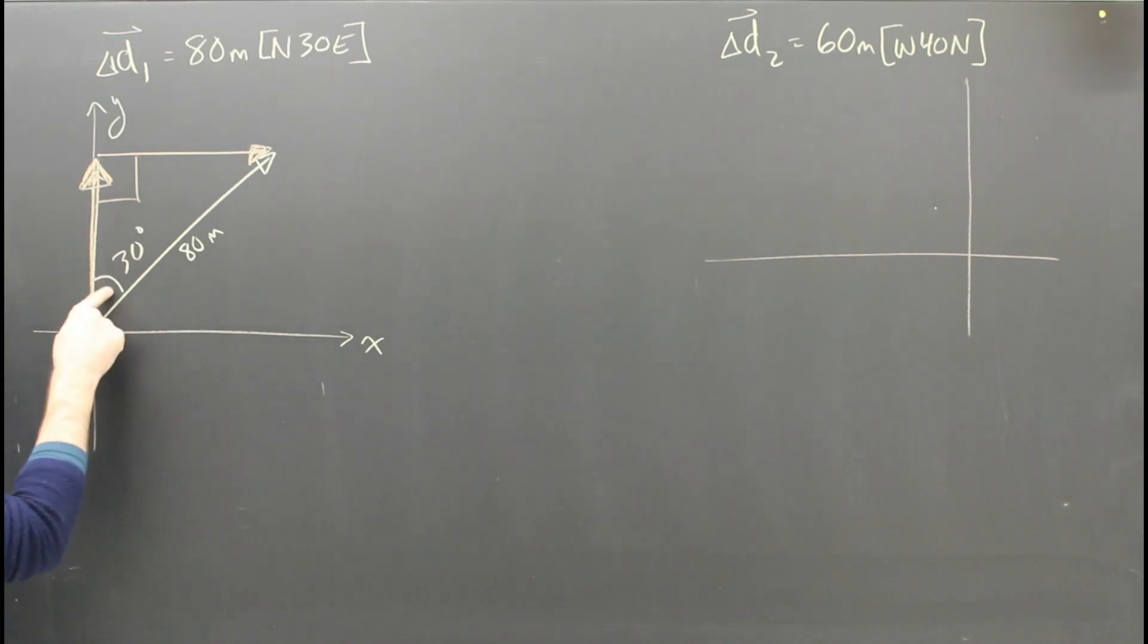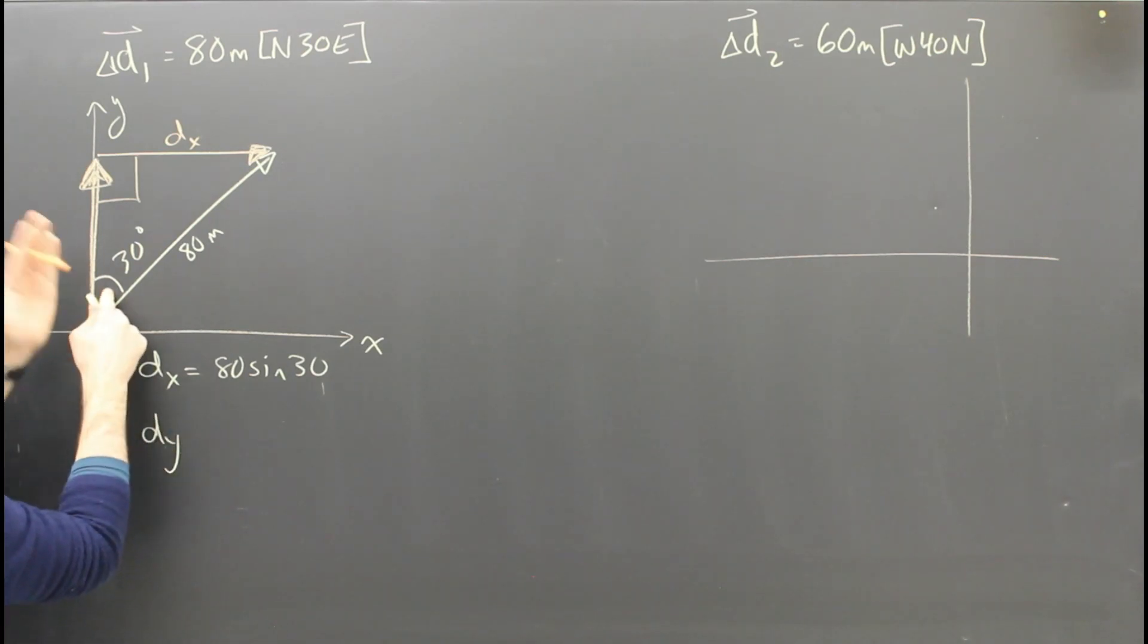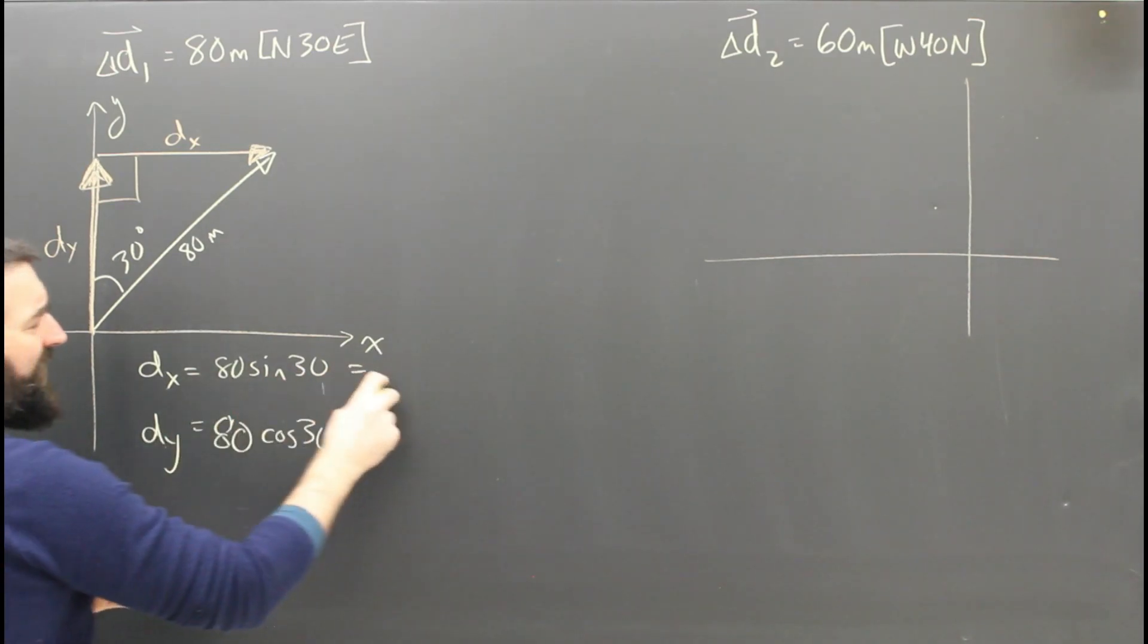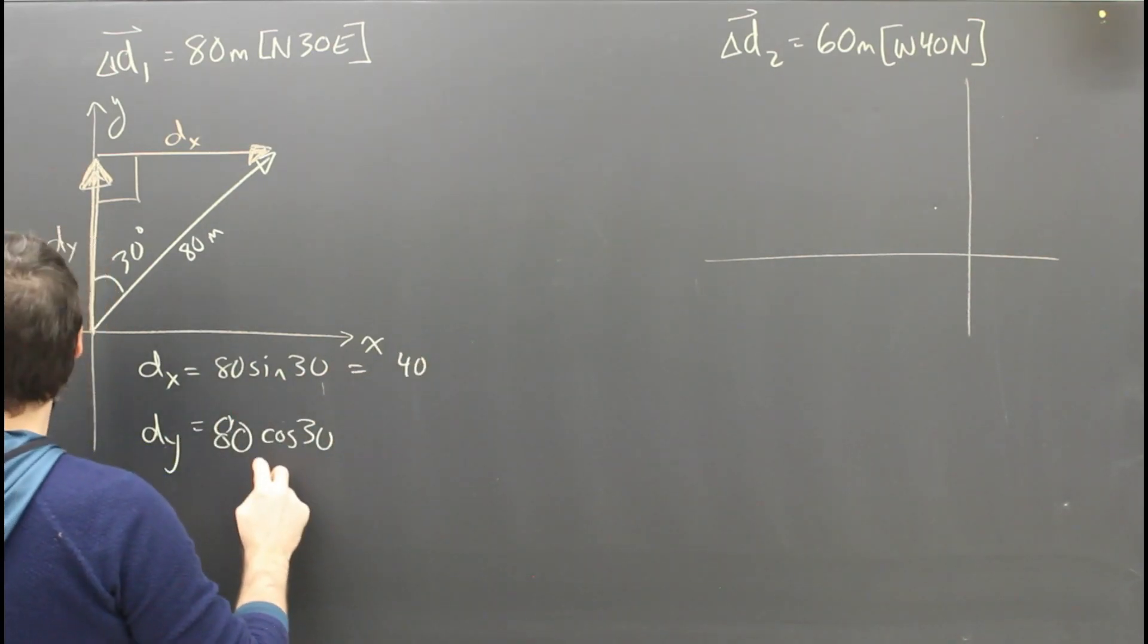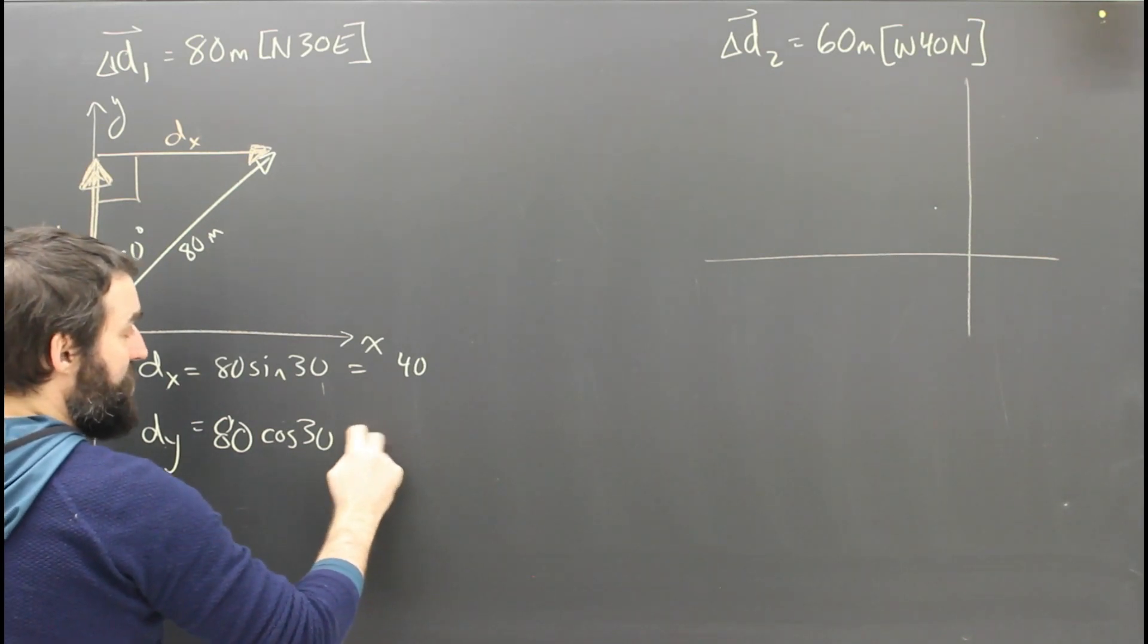Now I just do some tricks. So I've got this angle here, the opposite is going to be dx, and that's going to be sine. So I can see that dx equals 80 sine 30. And I can see that dy is going to be cos. This is dy right here. dy cos over 80. So dy equals 80 cos 30. Stopping it in, I get 40, and I get 69.3.